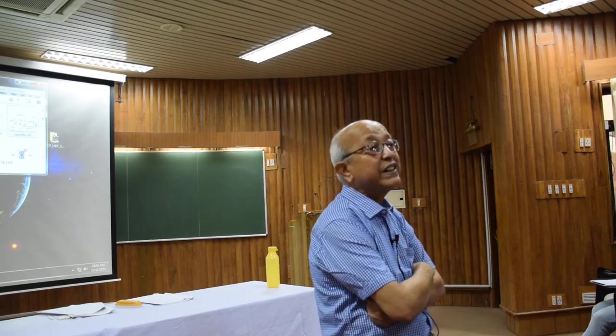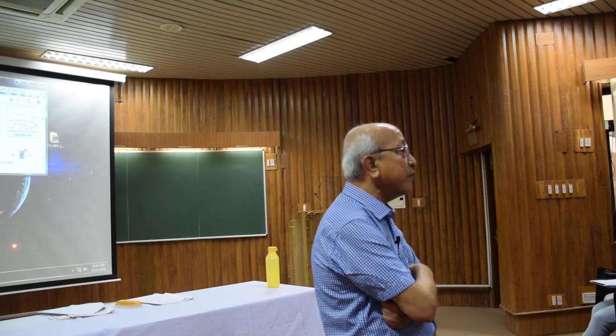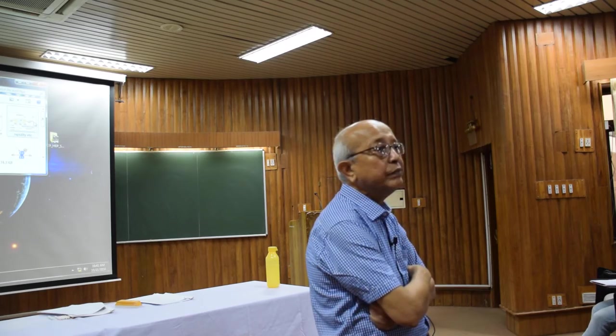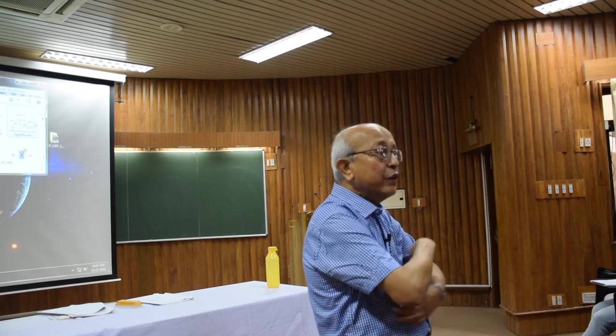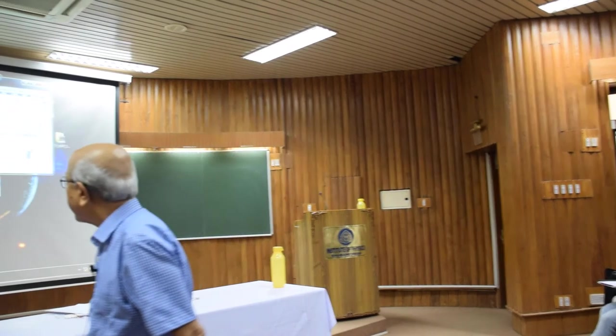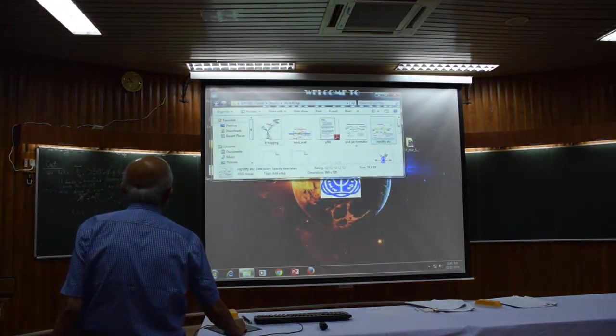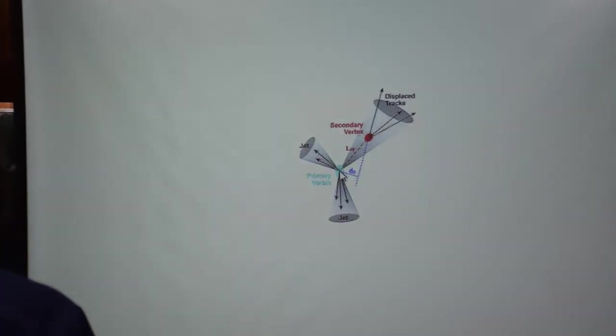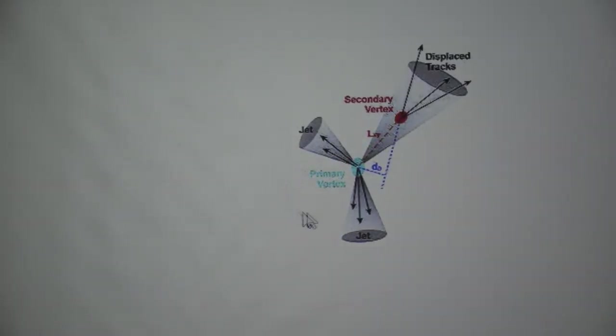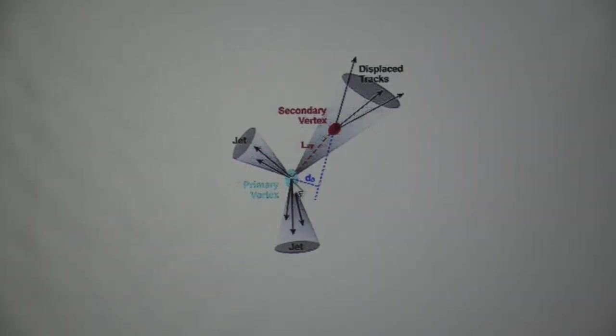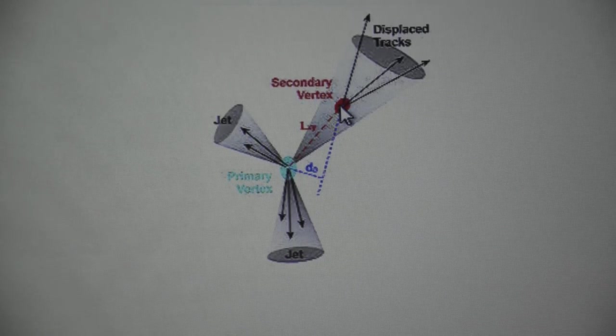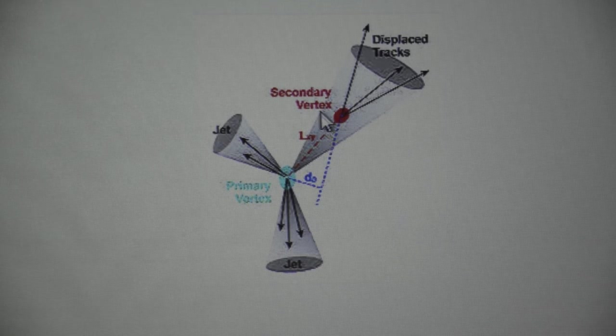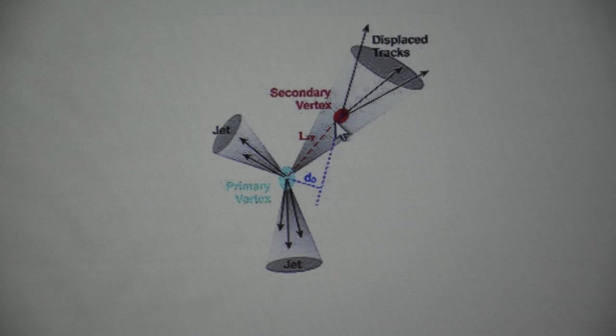All right. So, our interest in this intermediate guys who have small lifetime but just enough to give you a track within the detector which you can measure. And, as I told you I will just give you a picture nothing more. And the picture is the following. Suppose, this is the interaction vertex which is also called the primary vertex. The pp bar interaction will occur at this place here. Suppose, this is the B quark.